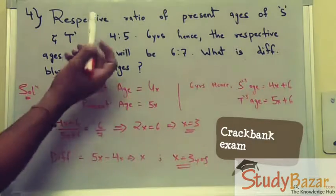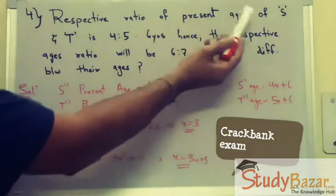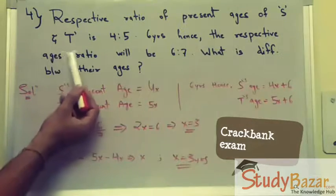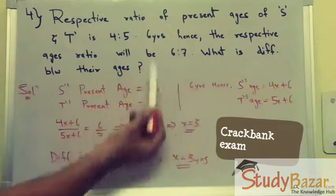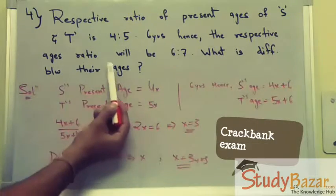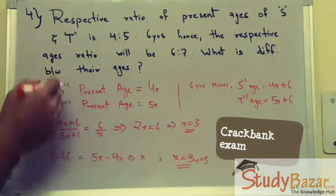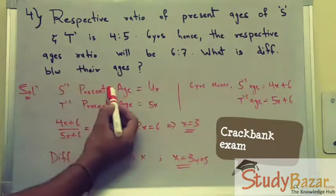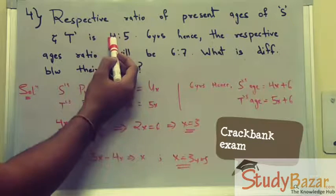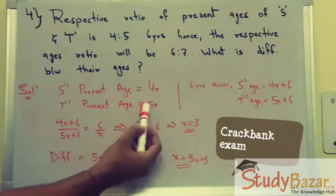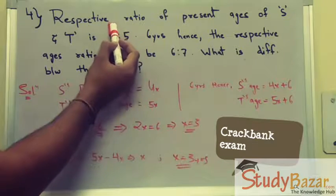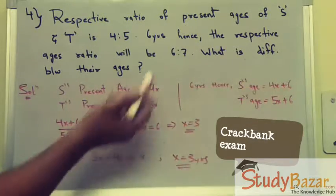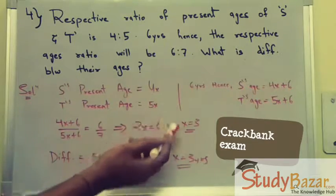Now let's see another example. The respective ratio of present ages of S and T is 4:5. Six years hence, the ratio will be 6:7. We have to find the difference between their ages. We assume the present ages of S and T as 4x and 5x respectively, using the given ratio.